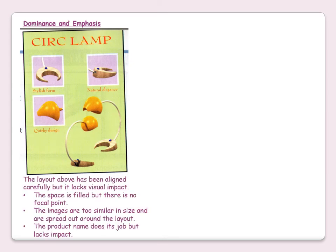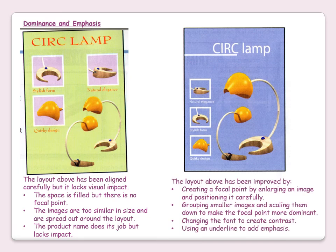Dominance and emphasis are related elements. Dominance occurs when one item stands out more than others and dominates the layout. Emphasis happens when an item is made more eye-catching. A layout may be carefully aligned but lack visual impact if there is no focal point and images are too similar in size. Improvement comes by enlarging an image to create a focal point, grouping and scaling down smaller images, and changing the font to create contrast while using an underline to add emphasis.